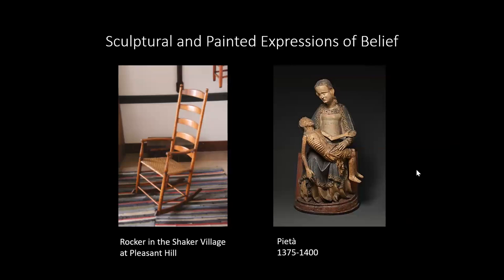Now, sculptural and painted expressions of belief: the rocker from a Shaker village is an interesting example because it has some similarities to the Pieta. The rocker expresses the Shakers' belief in form following function and the simplicity they sought to bring to their everyday lives. We could call them both structural objects — the one on the left is a functional piece of furniture — but they are a reflection of their culture's belief systems.